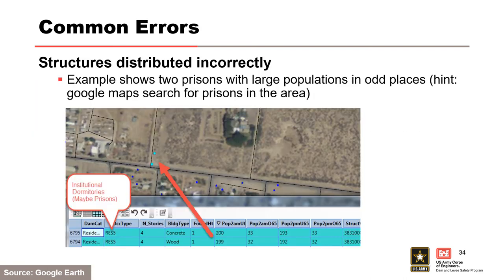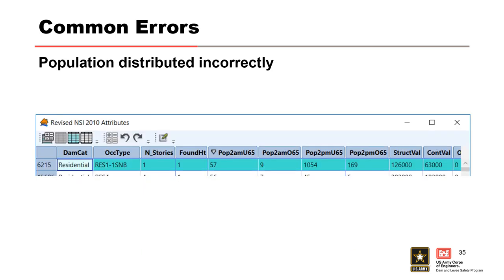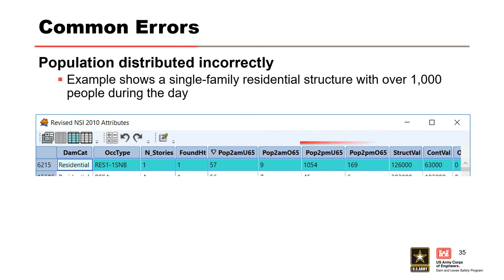Another issue: structures distributed incorrectly. Structure placement isn't always right — sometimes structures are placed in the middle of nowhere and it doesn't make any sense. Make sure they're placed appropriately, especially if they're in the way of the flood wave. In one case, two structures with a large number of people were inappropriately placed in the flood wave path. When placed correctly, they were outside the flood wave, which drastically reduced the consequences.